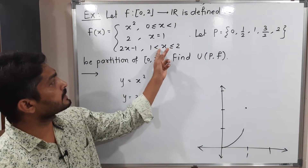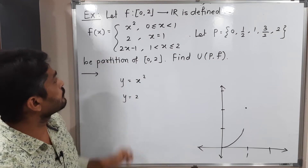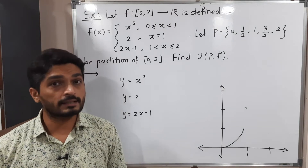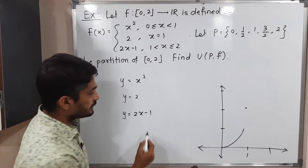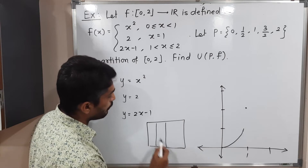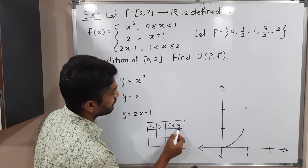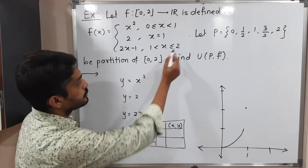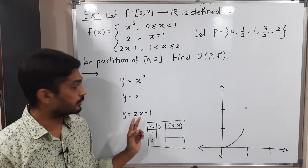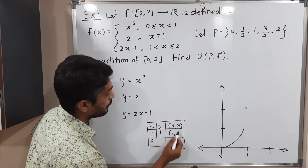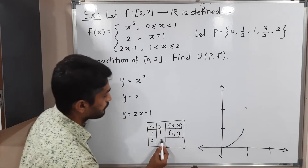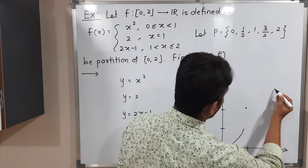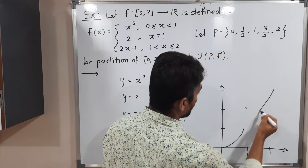For x greater than 1 and less than or equal to 2, f(x) = 2x − 1. Replacing f(x) by y, we have y = 2x − 1. Since both powers are one, it represents a straight line. We find two points: at x=1, y = 2(1)−1 = 1, giving starting point (1,1); at x=2, y = 2(2)−1 = 3, giving ending point (2,3). We join these two points to draw the line segment.